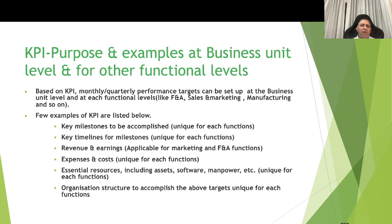The purpose of KPIs and examples at the business unit level: based on the KPIs just shared, monthly or quarterly performance targets can be set at the business unit level and at each functional level — finance and accounts, sales and marketing, production, and so on. Examples of KPIs listed at the macro level include key milestones to be accomplished, which are unique for each function. For sales and marketing, this could be market share, total sales, new product launches, or export markets.